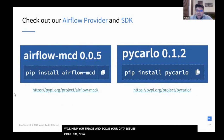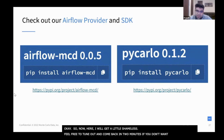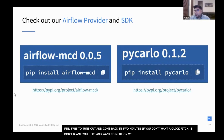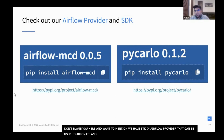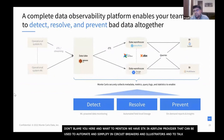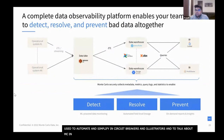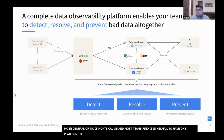I'm going to get a little bit shameless here. We do have an SDK and Airflow provider that can be used to automate, simplify, and customize circuit breaking in your Airflow DAGs or any other orchestrators. I also wanted to take a small opportunity to talk about Monte Carlo. Most teams will find it helps to have one platform to manage it all — circuit breaking, testing, monitoring, and lineage all in one place — which we refer to as the spectrum of data observability.